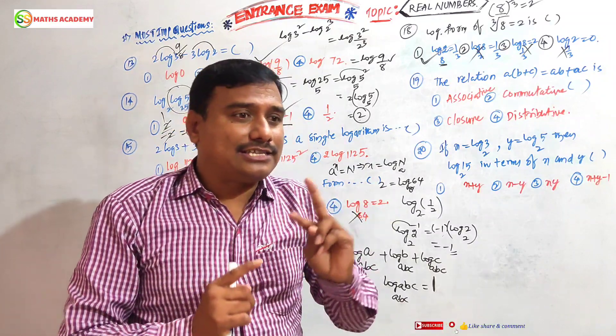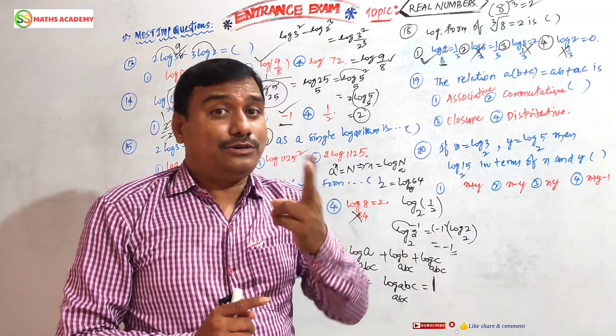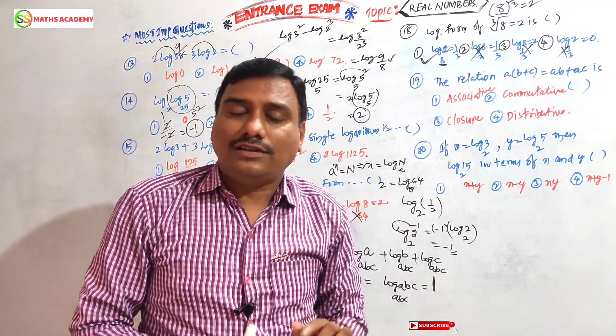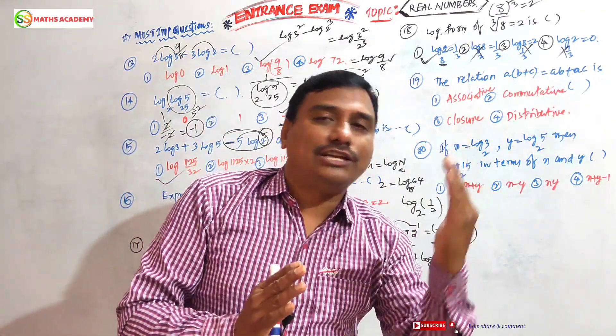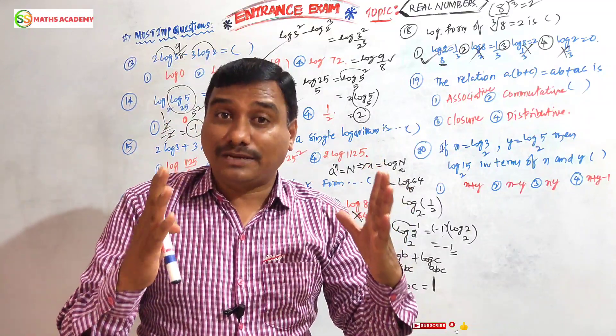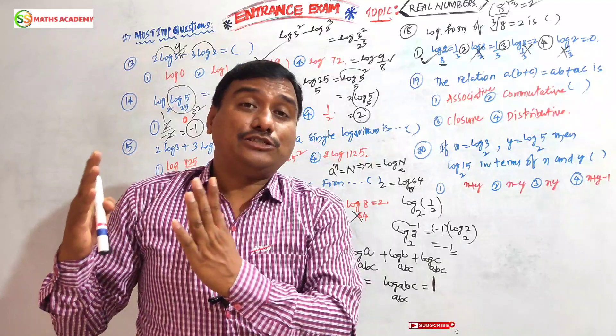What is commutative? LHS will be RHS. a+b equals b+a, a×b equals b×a. That is called commutative property. What is associative? In equal sign, left side we have three values, right side we have three values, same sign. a+(b+c) equals (a+b)+c.